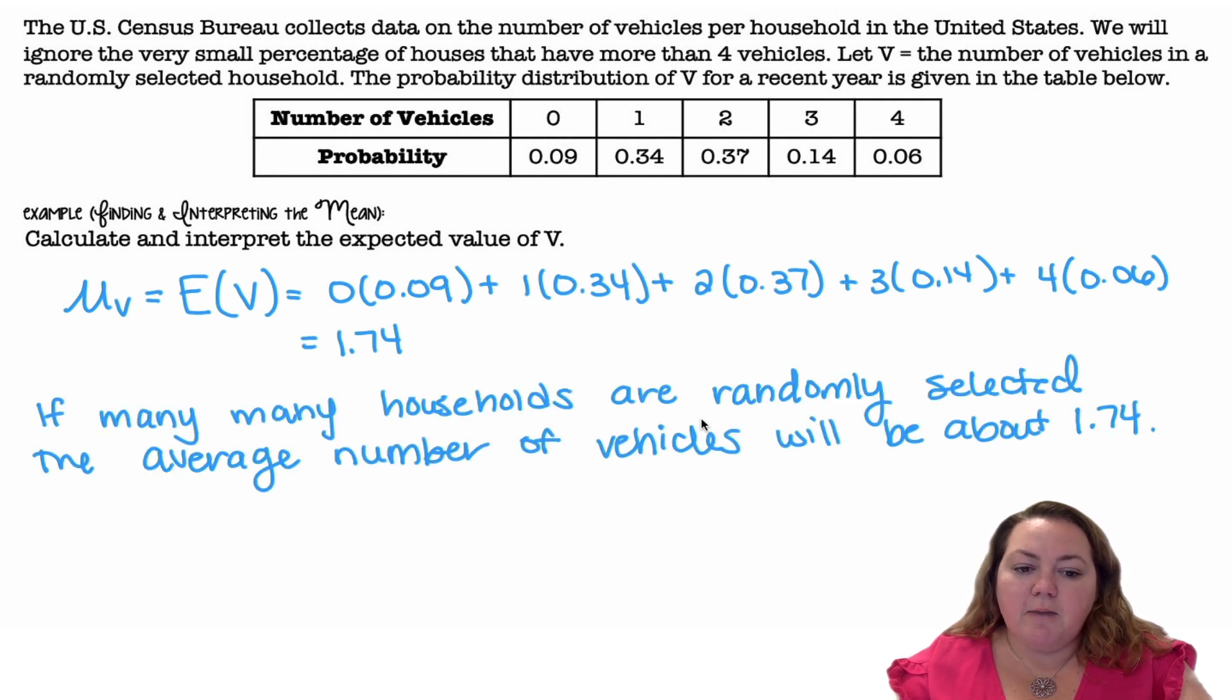To interpret it, we would say if many, many households are randomly selected, the average number of vehicles will be about 1.74.